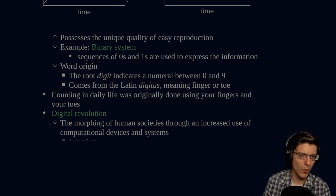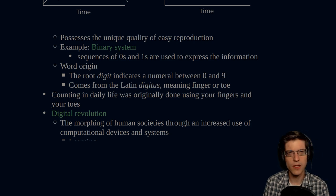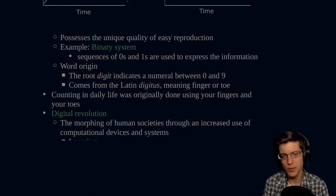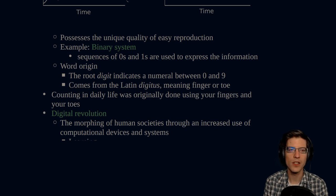Now, what's an example of digital in the realm of computers? Well, the binary system. This is the foundation upon which all of digital information is built in the modern era. And what is binary? It's a sequence of zeros and ones that's used to express information. Binary standing for two. It's either a zero or it's a one. It can't be anything else.